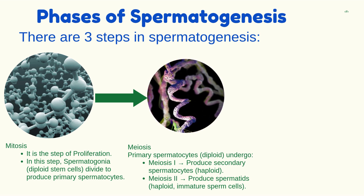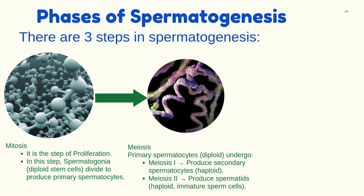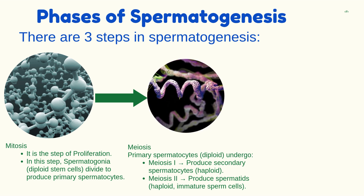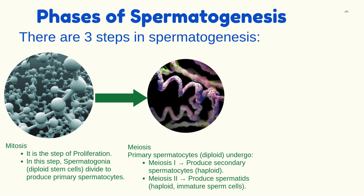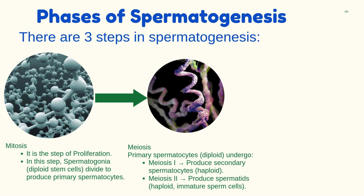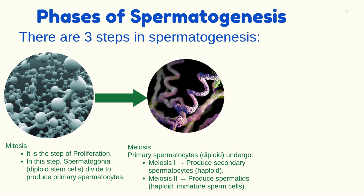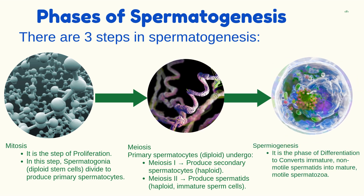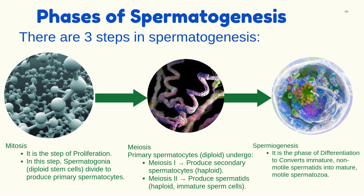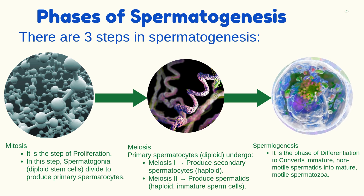Secondary spermatocytes then undergo meiosis two, producing spermatids — haploid immature sperm cells. The last step is spermiogenesis, the phase of differentiation. It converts immature non-motile spermatids into mature motile spermatozoa.